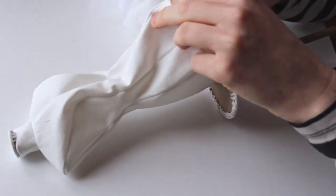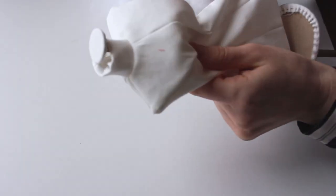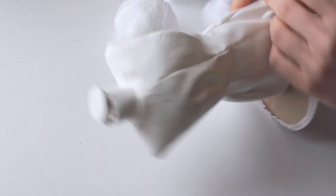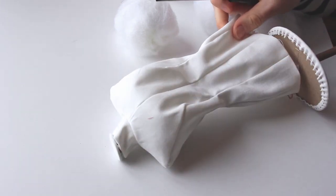Stuff the dress form using the same methods I showed previously, but now you should also check that the dowel is centered. Stuff very firmly, but try to maintain the symmetry.